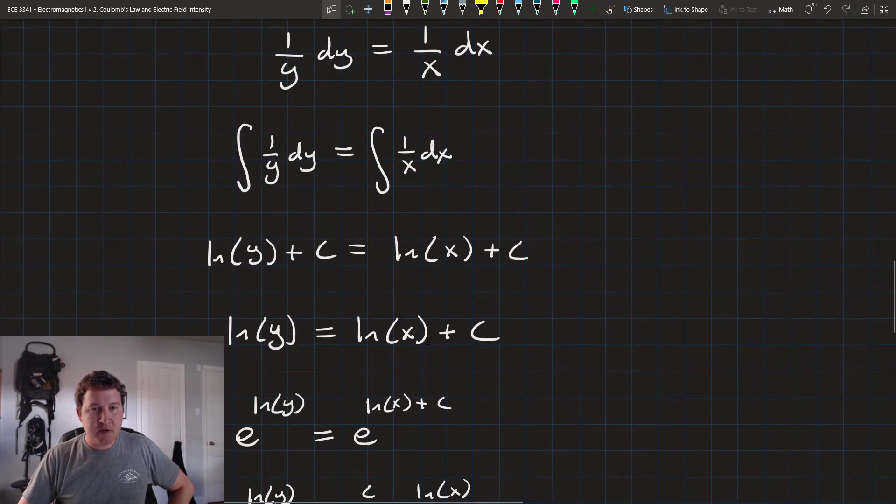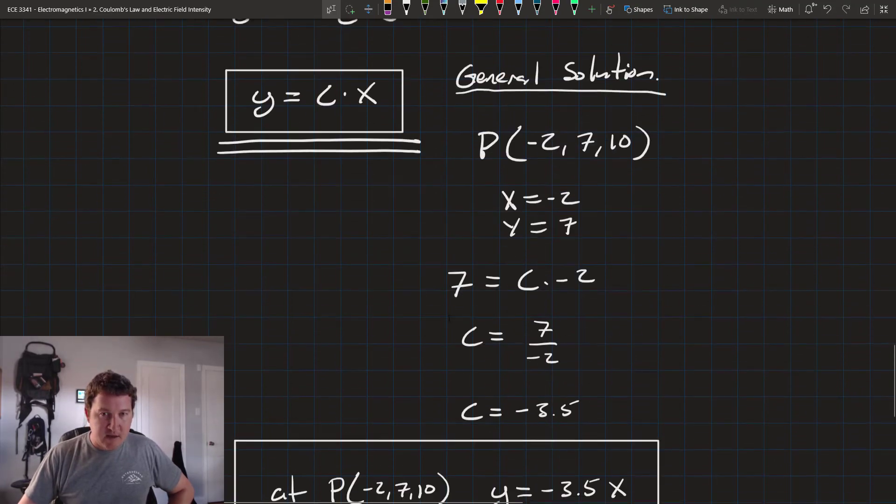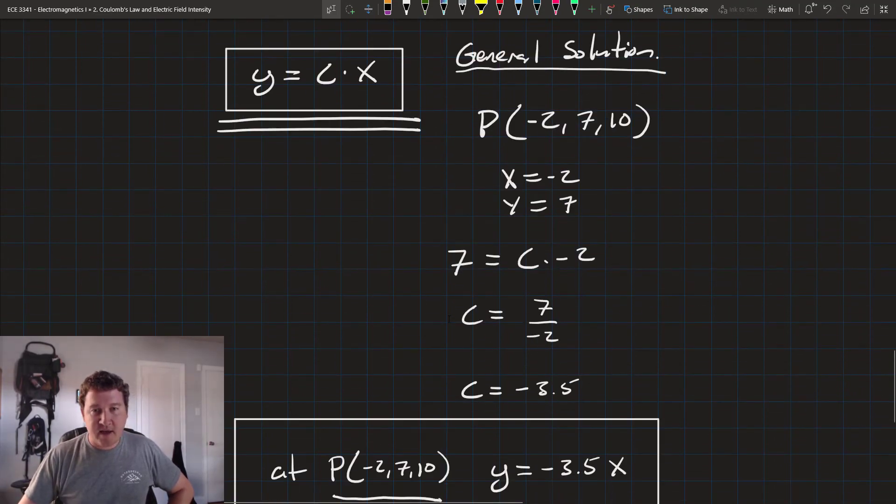And then once you have that, you just solve the separable differential equation to get a general solution. And then once you have the general solution, all you need to do is plug in points to get the electric field lines at that point.